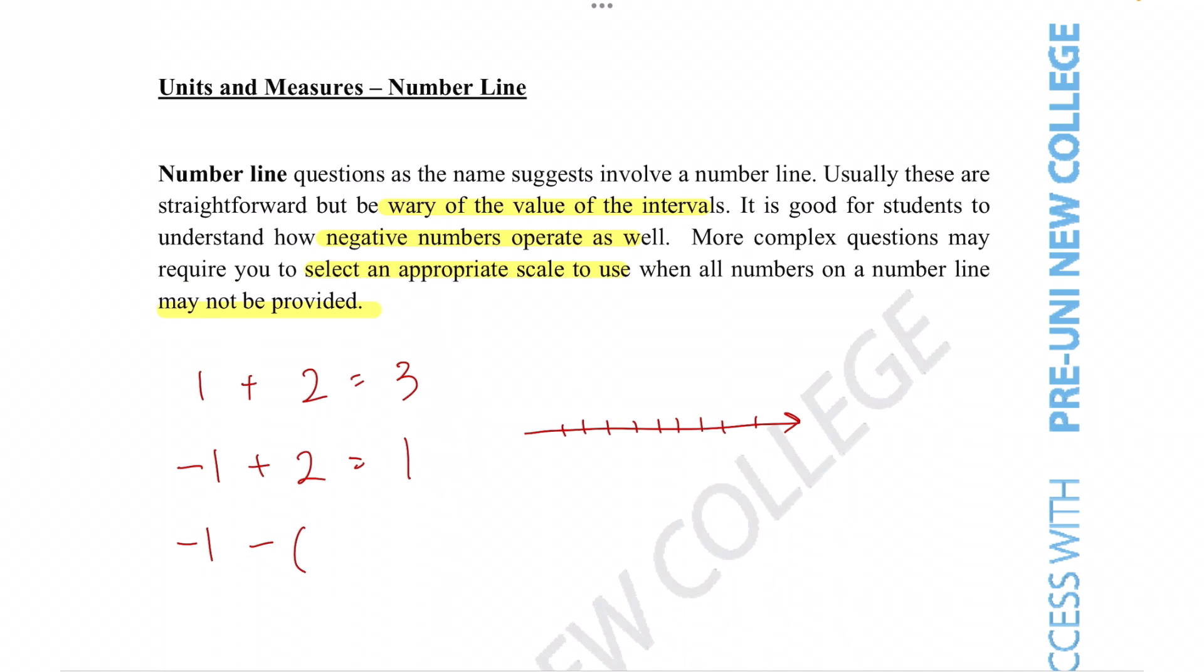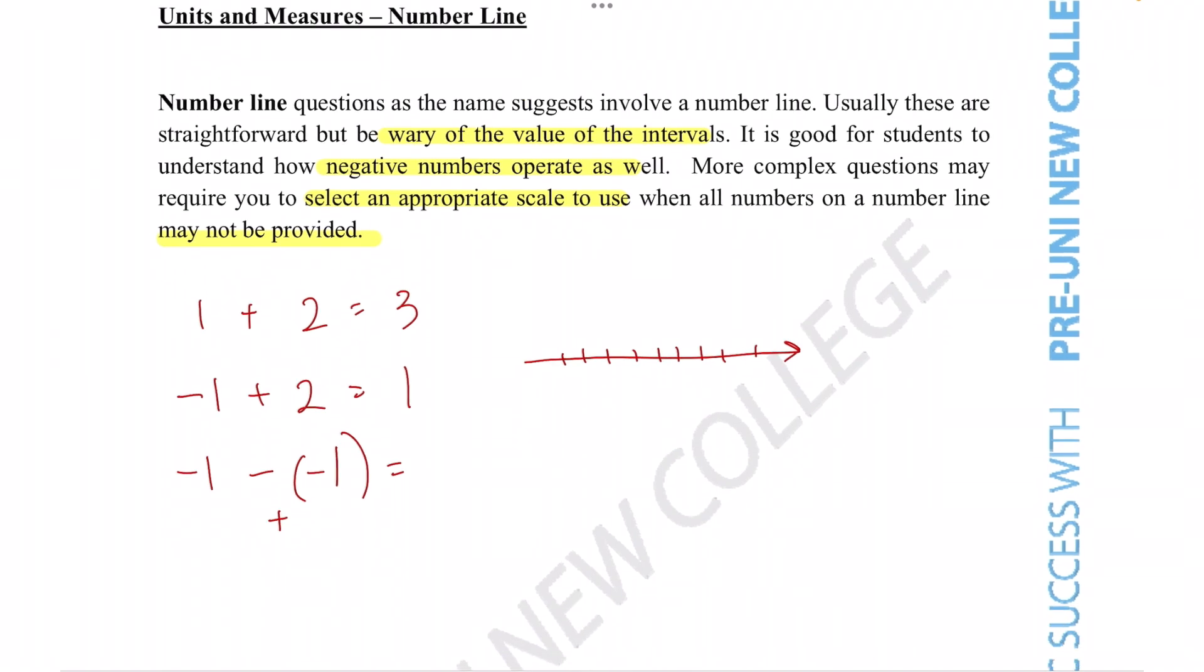But what if we mean minus a negative number as well. So this becomes negative one minus negative one. Well in this scenario since we have two of the subtraction symbols they actually cancel out and turn into an addition symbol. And so this is the exact same as negative one plus one giving us zero.